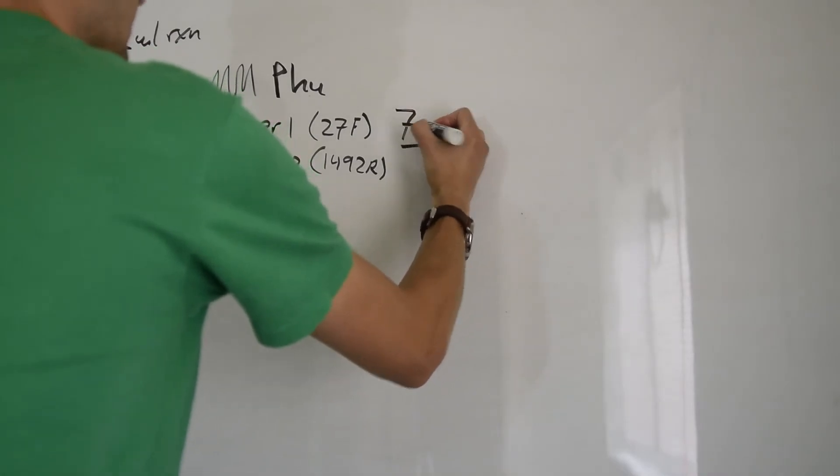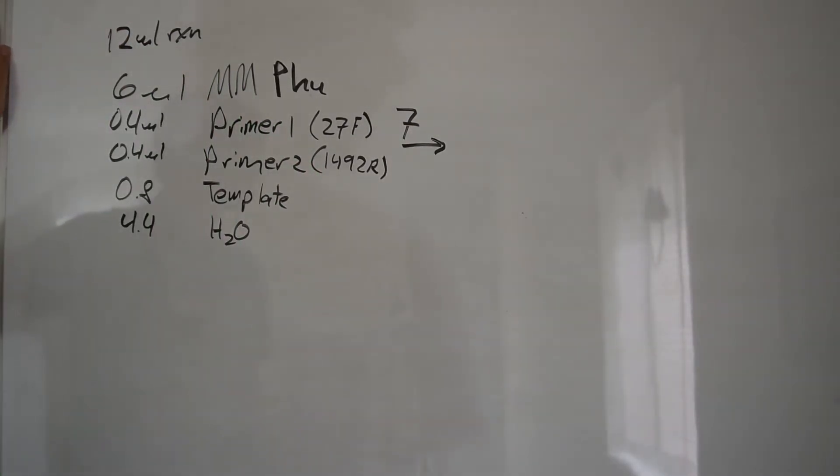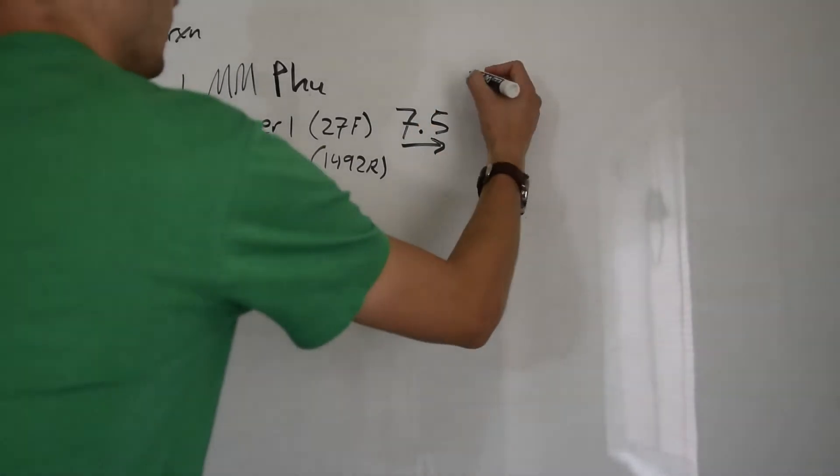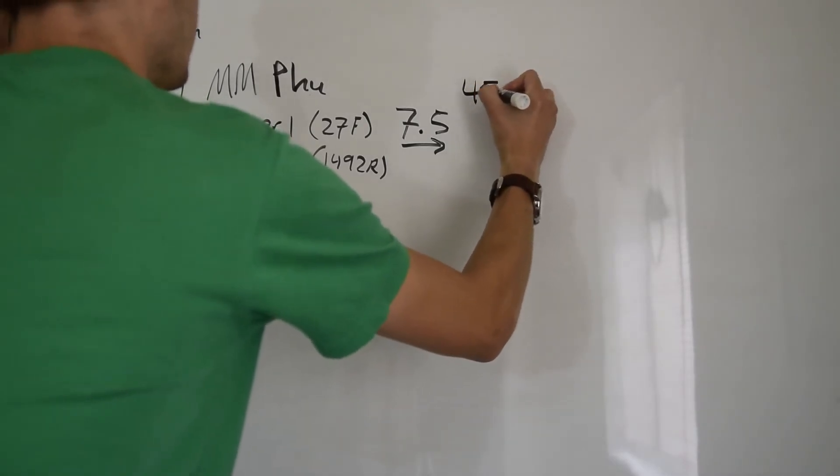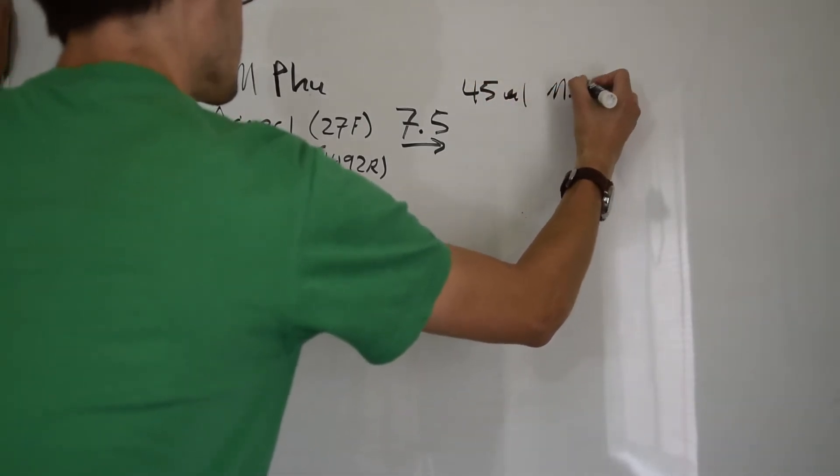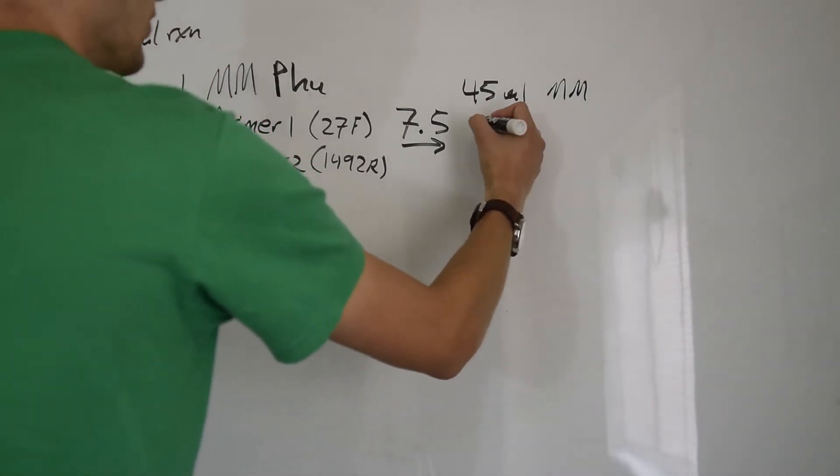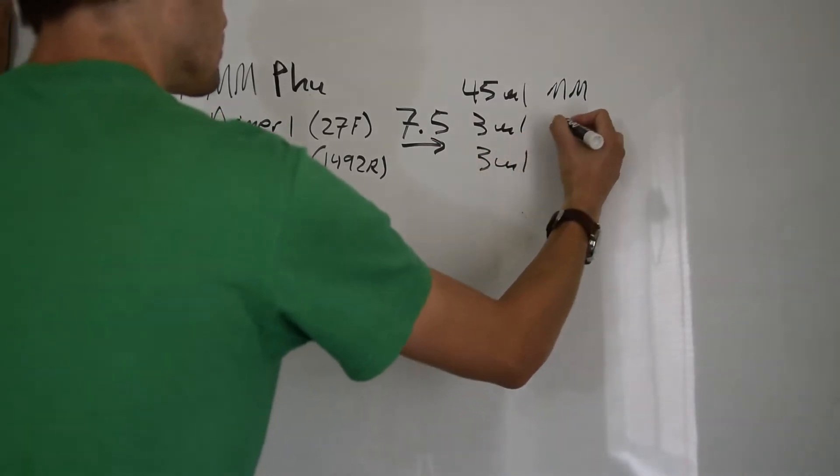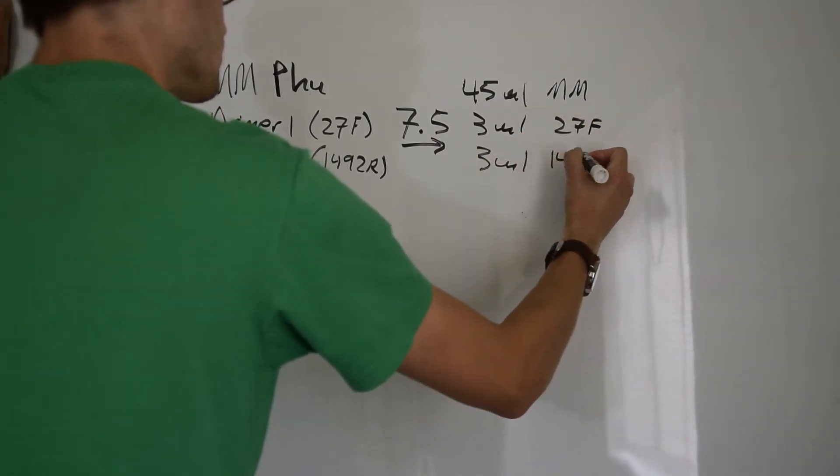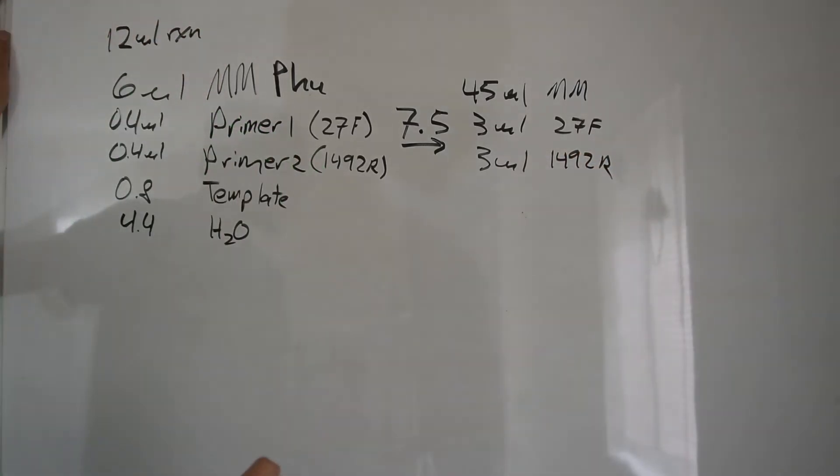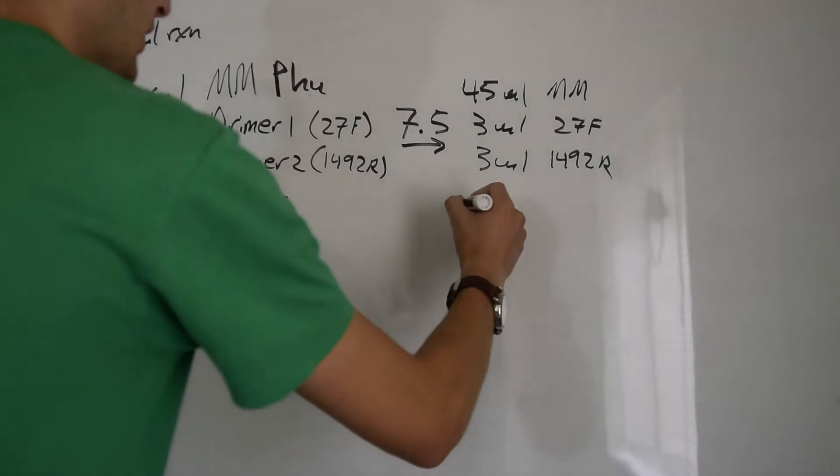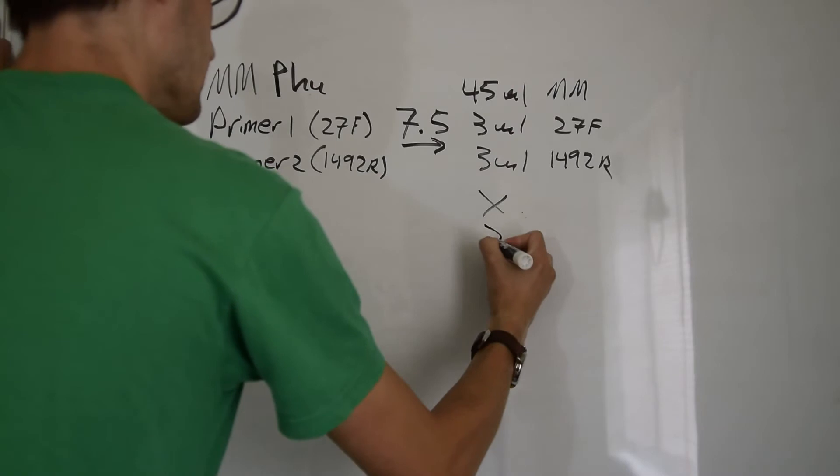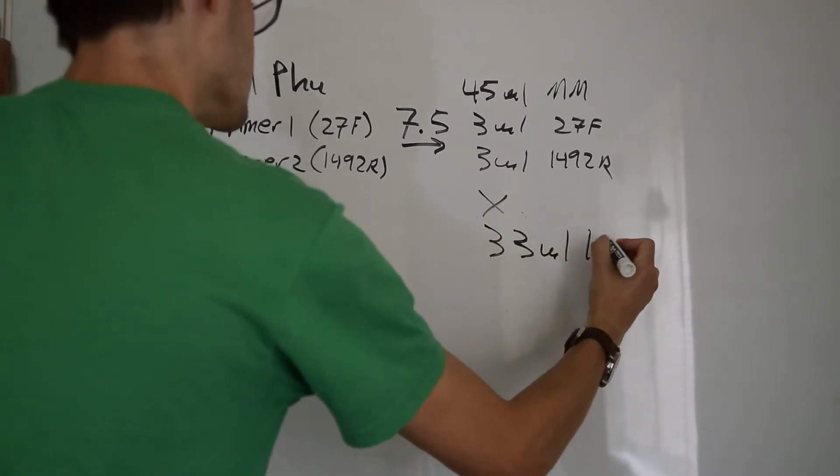So we're going to do 7 reactions here, but generally, to have a little bit extra, I might do something like 7.5, which multiplies nicely. That will give us 45 microliters of master mix. Each primer will require 3 microliters. We're not actually going to multiply the template here, because that will be added separately to each reaction. And we'll need 33 microliters of water. So we're going to mix those four components together in the video.